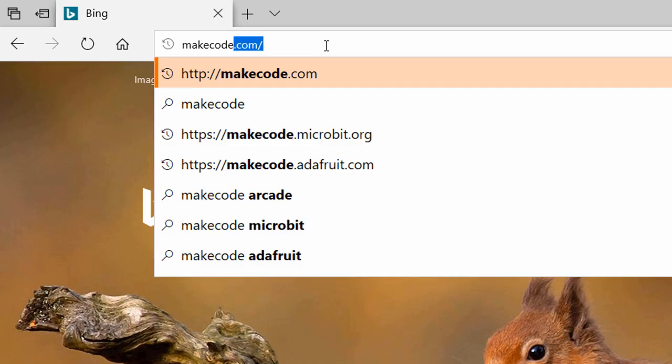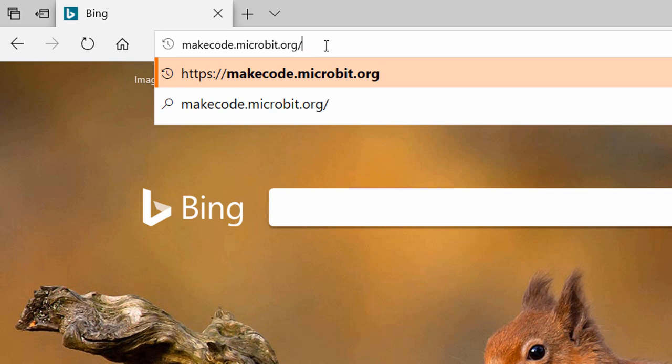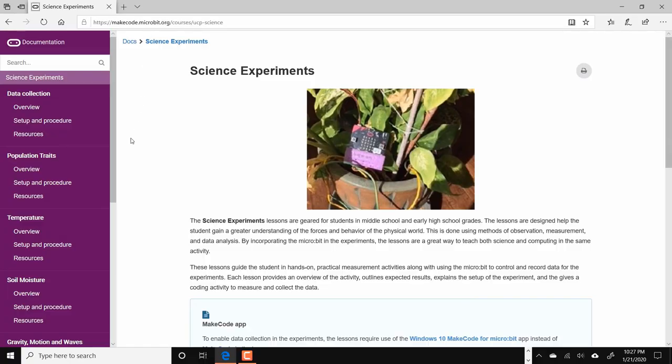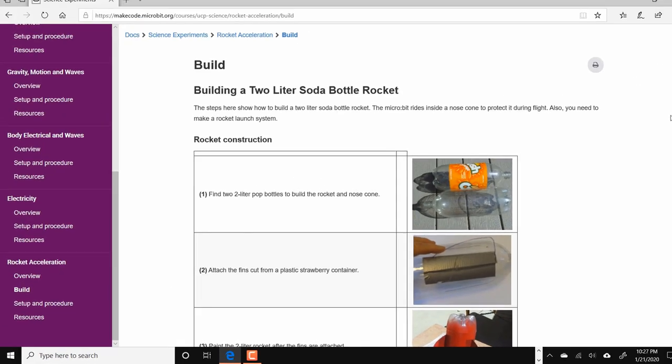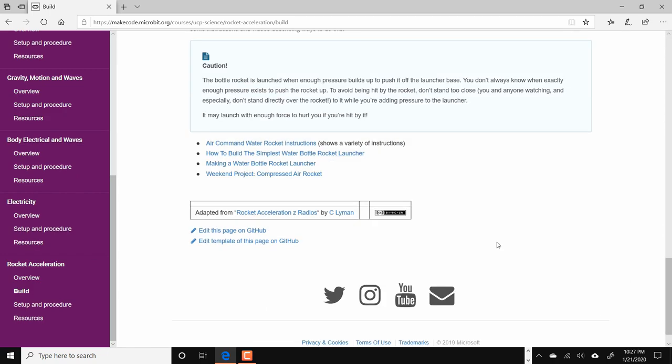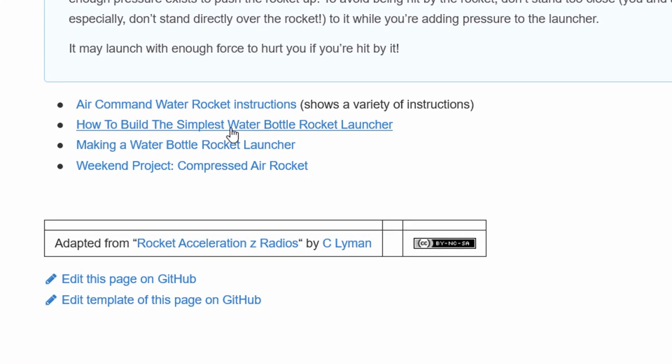To begin, you'll need to make your launching station. Head to makecode.microbit.org/courses/UCP-science. Go to the Rocket Acceleration Experiment and click on Build. At the bottom, you'll see a list of recommended launcher builds. I followed the simplest water bottle rocket launcher video by iCreatables.